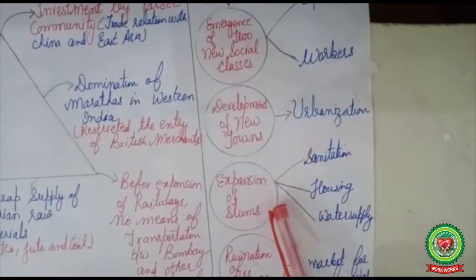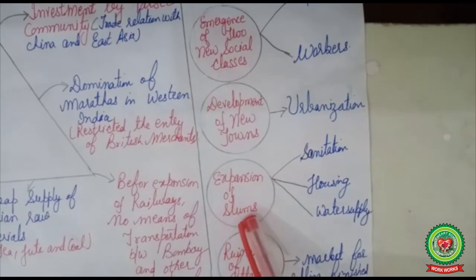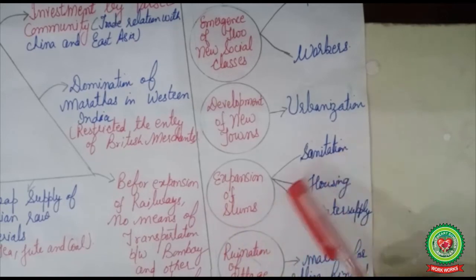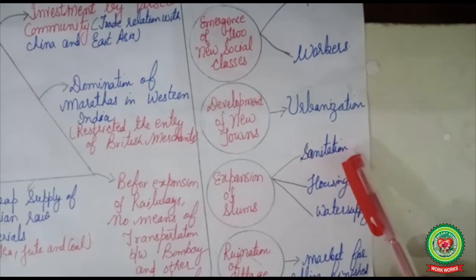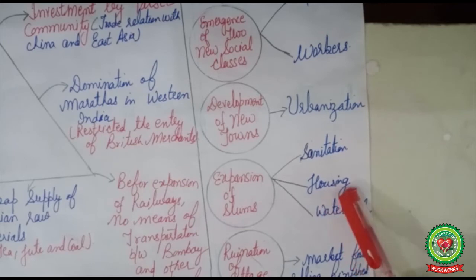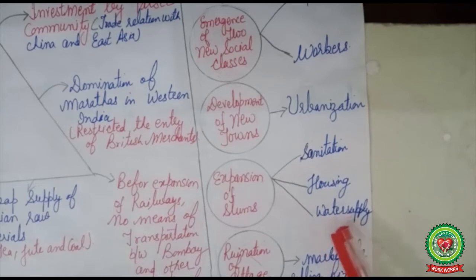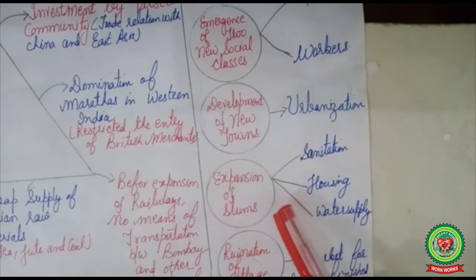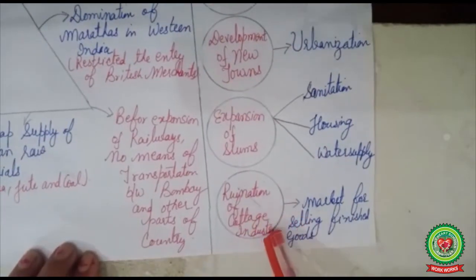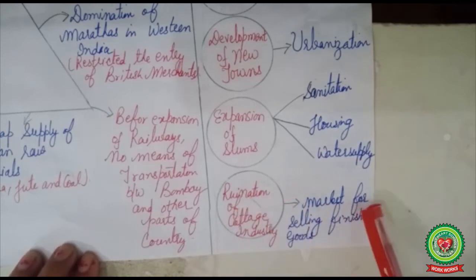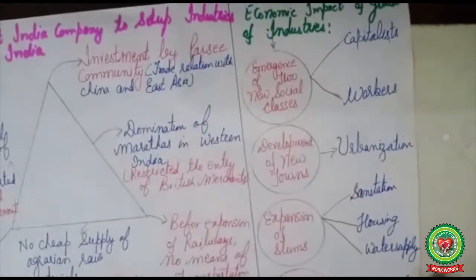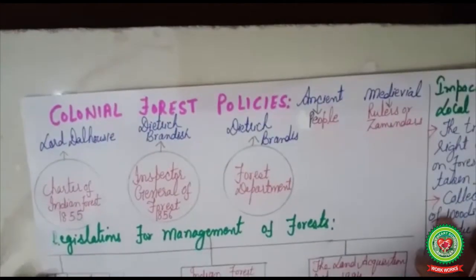Because of urbanization, there was expansion of slums — areas of a city where living conditions are very bad, with poor sanitation, bad hygiene, dirty buildings, and inadequate water supply. There was also ruination of the cottage industry, which totally deteriorated, and India became a market for selling finished goods.